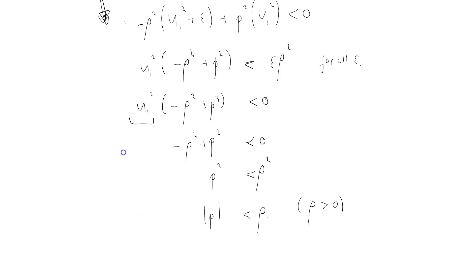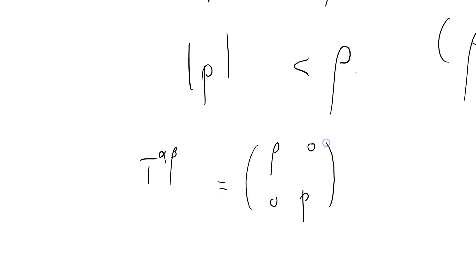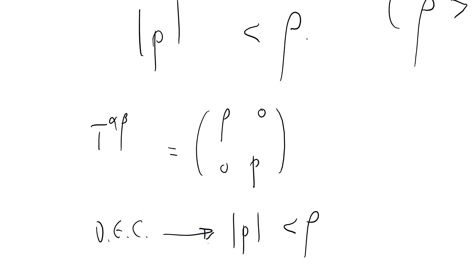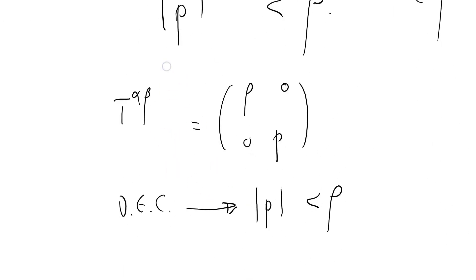Well, that's quite a nice little piece of reasoning. Let me go through that whole stream of reasoning again. I've got the stress-energy tensor for a perfect fluid, and I've now determined that the modulus of P must be less than ρ. The dominant energy condition implies that the modulus of P has got to be less than ρ — because of all this reasoning here. Isn't that nice?